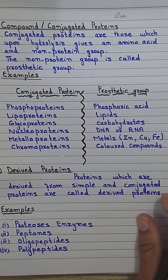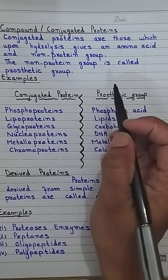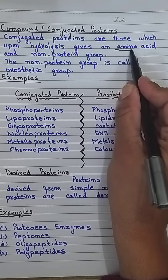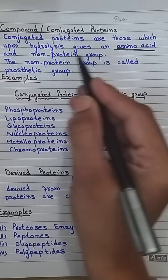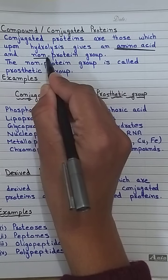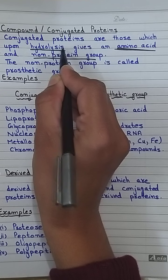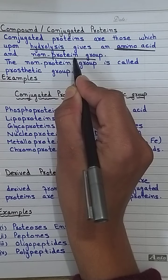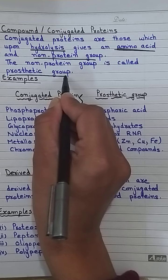The second type of proteins are compound and conjugated proteins. Upon hydrolysis, these proteins produce amino acids, because amino acids are the building block of every protein. But in addition to amino acids, they also produce a non-protein group. When they break down, the non-protein group produced is called the prosthetic group.